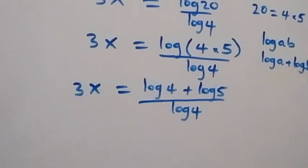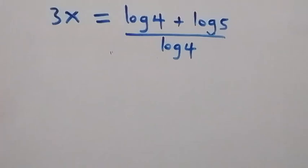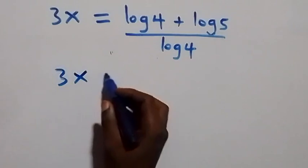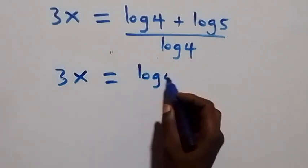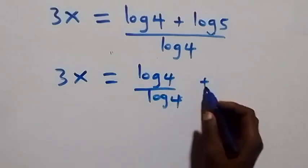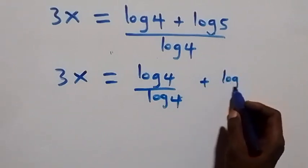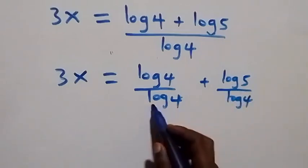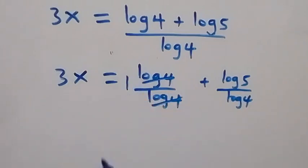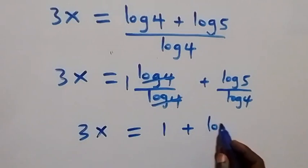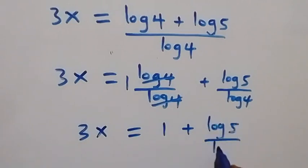From here we can separate this fraction into two fractions and we have 3x equals log 4 over log 4, plus log 5 over log 4. Then log 4 over log 4 cancels to one, so this becomes 3x equals 1 plus log 5 over log 4.